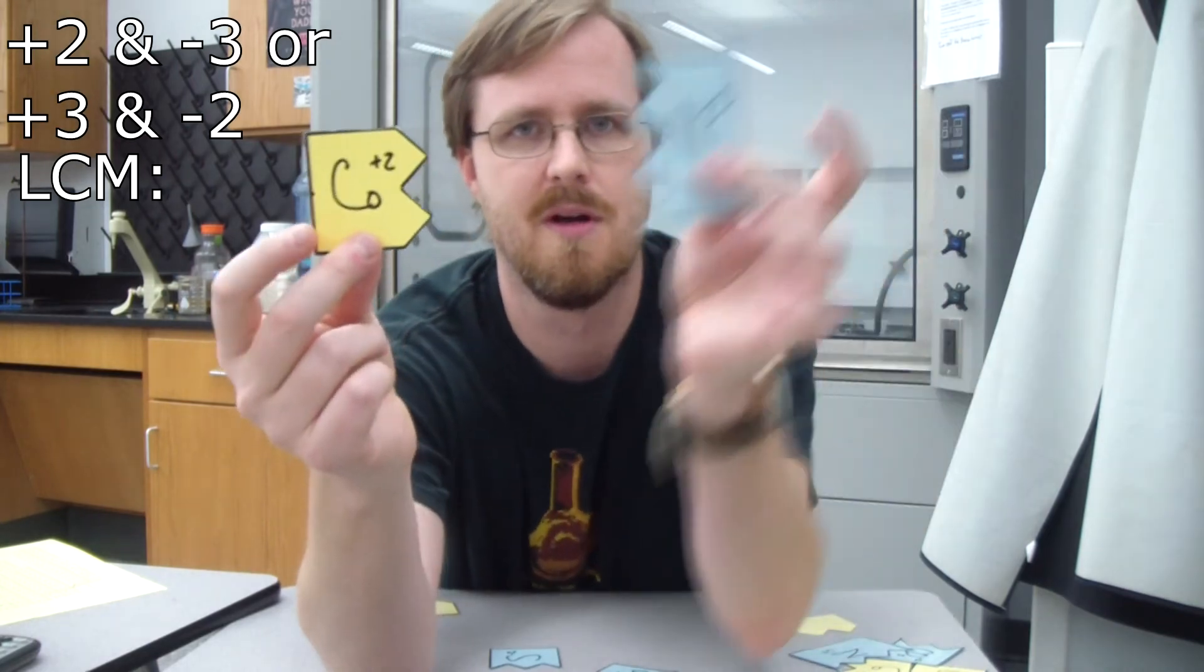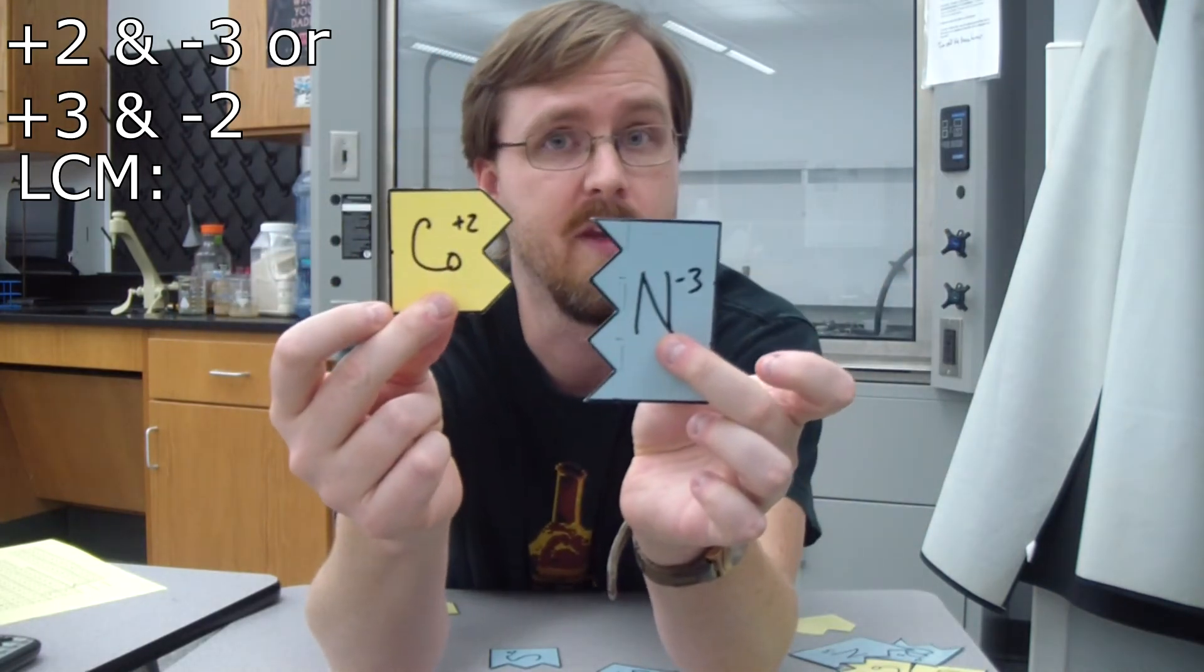What if, though, you have a 2 and a 3? Well, the lowest common multiple there is actually 6.